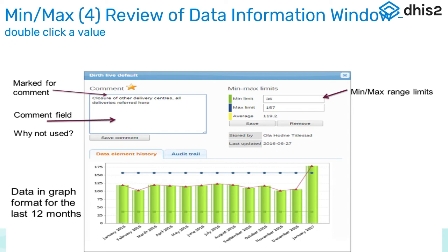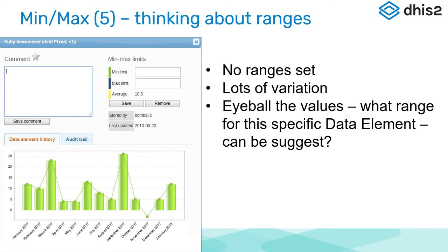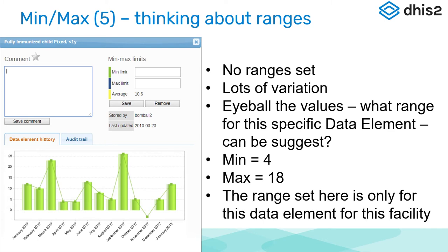On the right, we see where you can set the MinMax ranges — you can manually set them and save them. We also see the graph in data format for the last 12 months. If we look at this data information window, no ranges have been set and there's a substantial amount of variation. If you eyeball the values, you could manually set ranges for this specific data element for this specific facility. Our minimum could be 4, which would track everything except the 0, and the maximum would be 18, which would track everything above the 20 line. Just remember that this range is only for this data element for this facility — it's not carried over anywhere else.